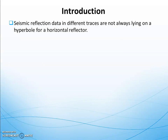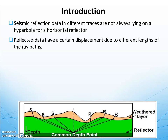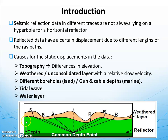So what is static? Basically, seismic reflection data in different traces are not always lying on a horizontal reflector, particularly for land acquisition. The reflected data from the source to the receiver will have a certain displacement due to the different lengths of the ray path. The causes of the static problem in the data come from topography and the differences in elevation.